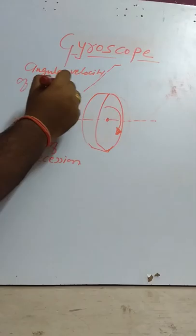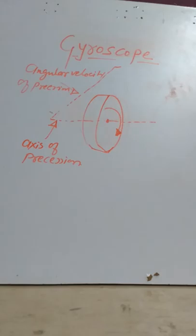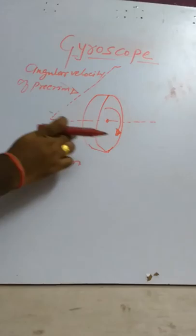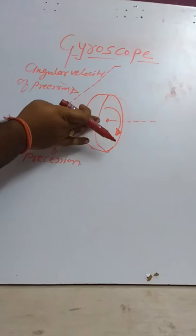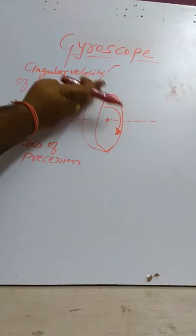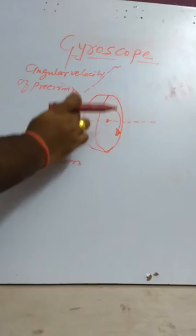After this we need to understand the concept of gyroscopic couple. After getting angular velocity of precision, the disc experiences some momentum. We are providing the axis of precision first, and then giving some angular velocity to the disc. Due to that momentum, while turning the disc in any direction, a gyroscopic couple is induced. We have two gyroscopic couples: one is active and another is reactive.